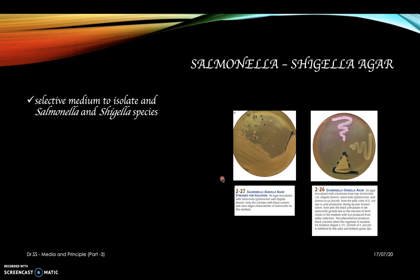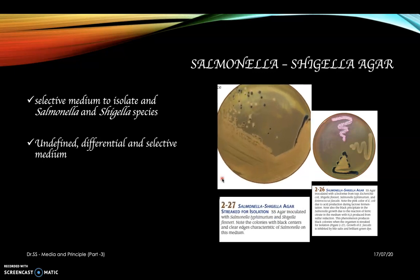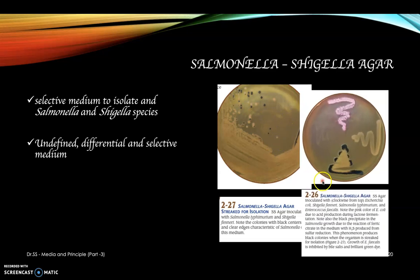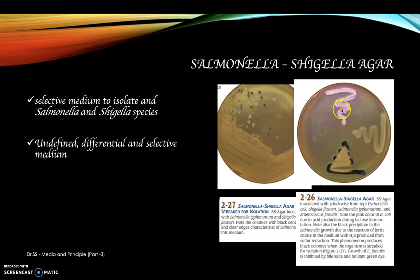Salmonella Shigella agar is used for the identification and isolation of Salmonella and Shigella species. It is an undefined differential and selective medium. Two organisms are streaked: Salmonella typhimurium and Shigella flexneri. Black-centered colonies indicate Salmonella species. In a second plate, four organisms are streaked — E. coli, Shigella flexneri, Salmonella typhimurium, and Enterococcus faecalis. E. coli ferments lactose so appears in a different color. Black colonies are formed by Salmonella typhimurium. Enterococcus faecalis cannot grow on SS agar.